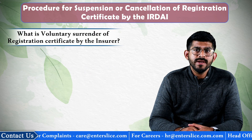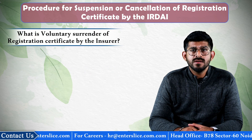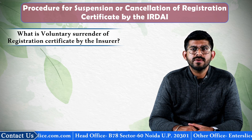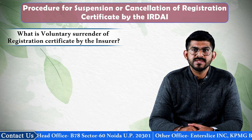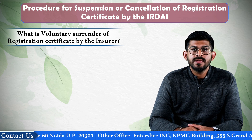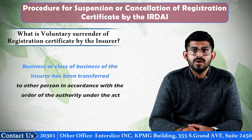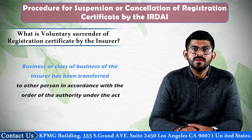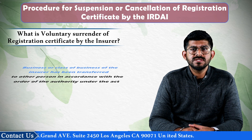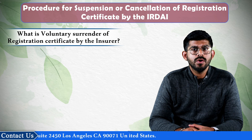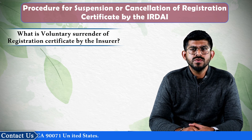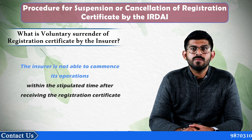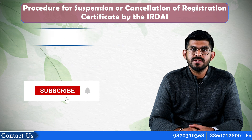Now we will discuss what is the voluntary surrender of the registration certificate by the insurer. The insurer may voluntarily surrender the registration certificate and request the authority to cancel the same after examining the request. The registration certificate will be surrendered voluntarily in the following cases: if the business or class of business of the insurer has been transferred to another person in accordance with an order of the authority under the Act; if the business or class of business has been transferred to or amalgamated with the business of any other insurer who has obtained approval from the authority; or if the insurer is not able to commence operations within the stipulated time after receiving the registration certificate.